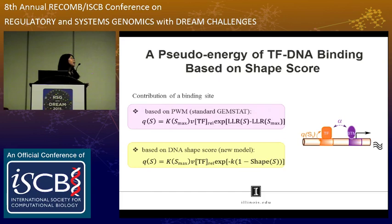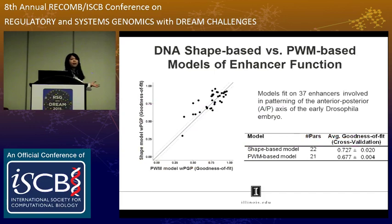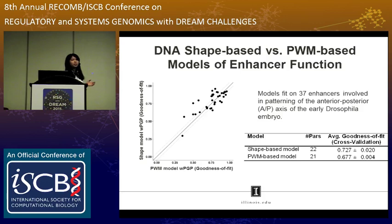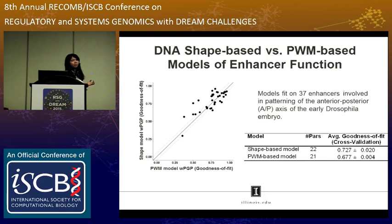We fit both the DNA shape model and the PWM-based model on a set of 37 enhancers responsible for regulating anterior-posterior patterning in the Drosophila embryo. In the scatter plot, most enhancers show improvement when using DNA shape compared to PWM. Quantitatively, we ran 10-fold cross-validation on both models five times. The shape-based model achieved 0.72 compared to 0.67 for the PWM model, so we are confident the DNA shape model performed arguably better.